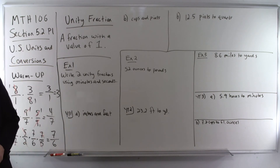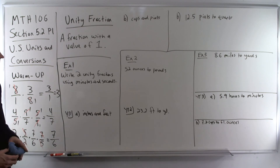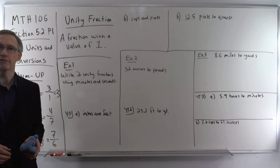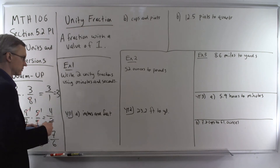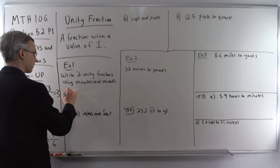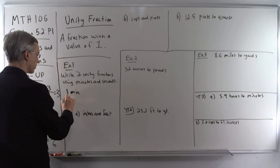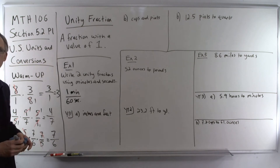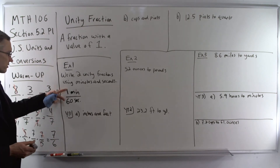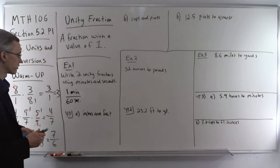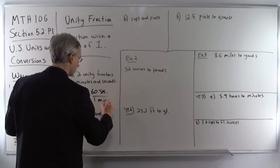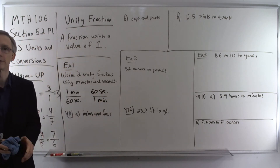So we're going to start off by creating some unity fractions using minutes and seconds. With each conversion factor, there are two different fractions we can create. We can have a fraction with minutes on top: in one minute, that's equivalent to 60 seconds, so we have one minute over 60 seconds. We can also flip it over and take the reciprocal — that's 60 seconds over one minute. Which unity fraction we use will depend on the application.